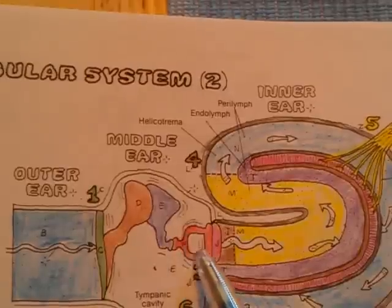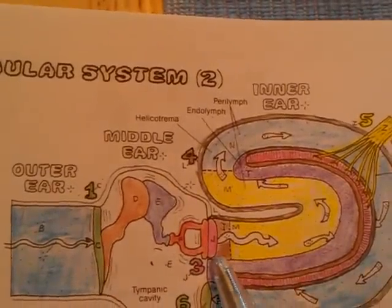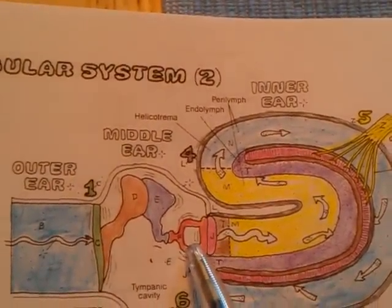Then you have the stapes, or the stirrup, which is anchored into the fenestra vestibuli. This is the smallest bone in the body.